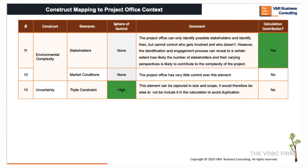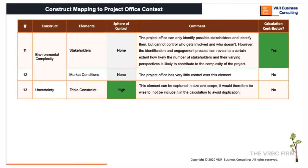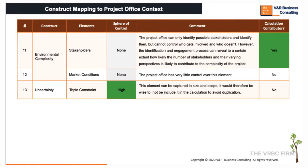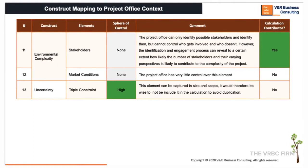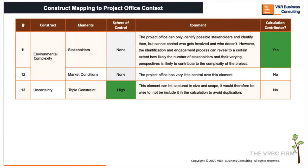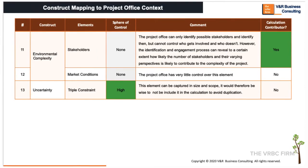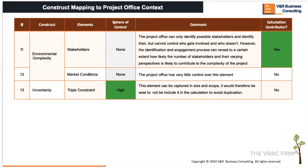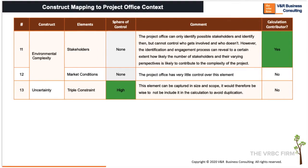We leave out uncertainty in relation to the triple constraint to avoid duplication, as many of its attributes are already significantly captured in the other elements. An assessment of the impact of scope on project complexity should also capture uncertainty in relation to the said scope. The same goes for the capturing of size and goals in the organizational and technical complexity constructs, respectively.